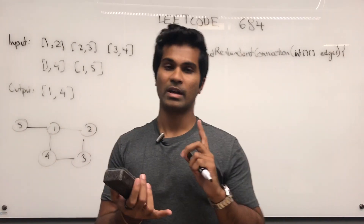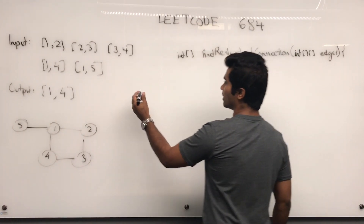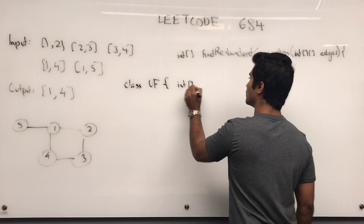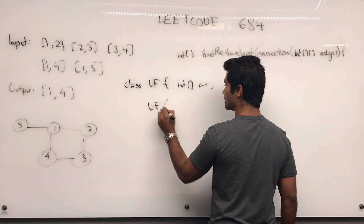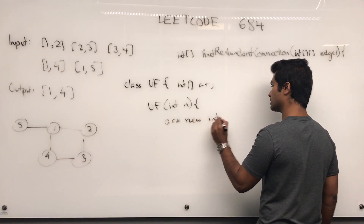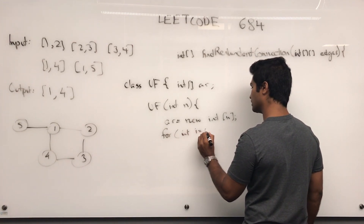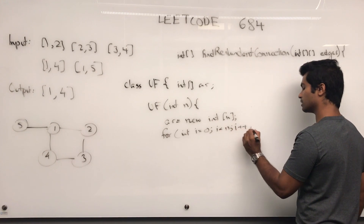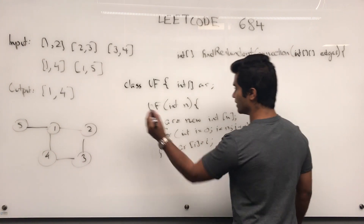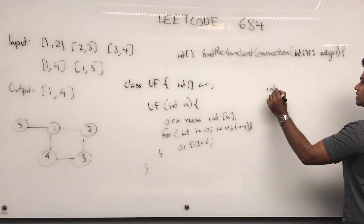First I'm going to write out what the disjoint set methods look like, then I'll get into the algorithm. So first we're going to have a class UF for union-find. It's going to have an int array, and the constructor is going to initialize it: ar is new int[n], and then we initialize it — for int i = 0; i < n; i++ — ar[i] is going to be i. That's just the constructor.